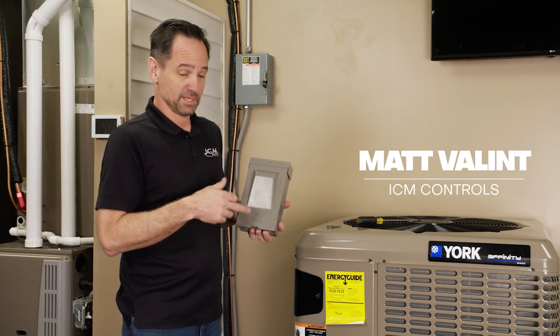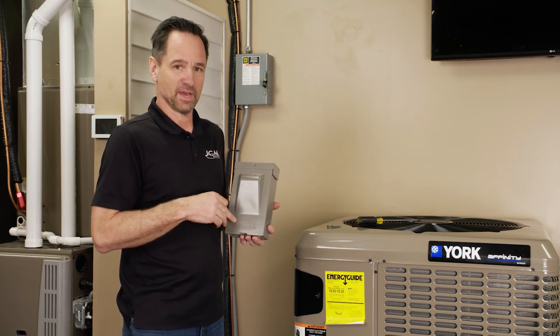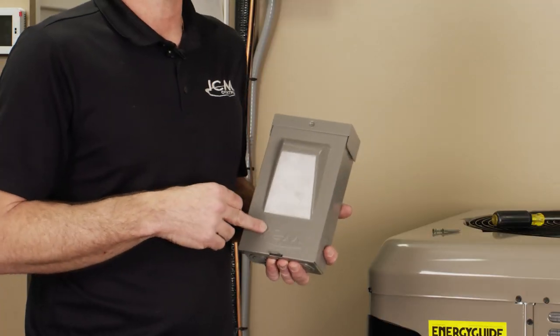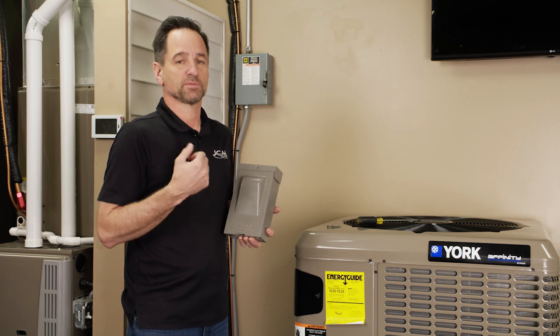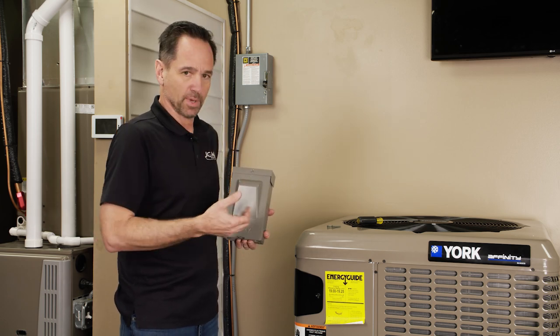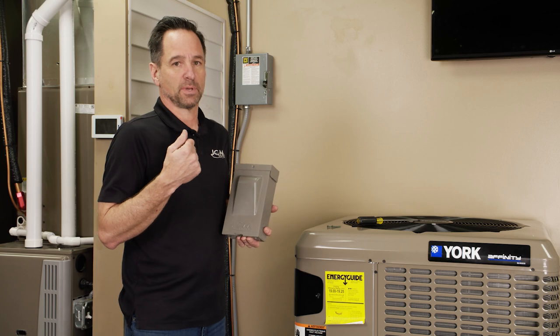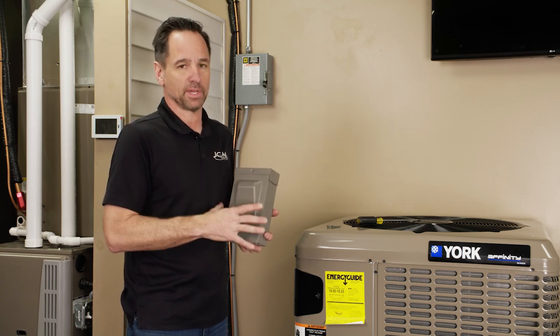Today we're going to be looking at and installing the ICM 495. This is a 60 amp non-fuse disconnect designed to protect your single phase 120, split phase 240 equipment such as air conditioners, heat pumps, mini splits, pool, spa and many other items.